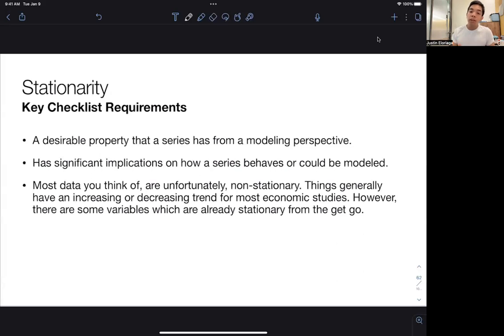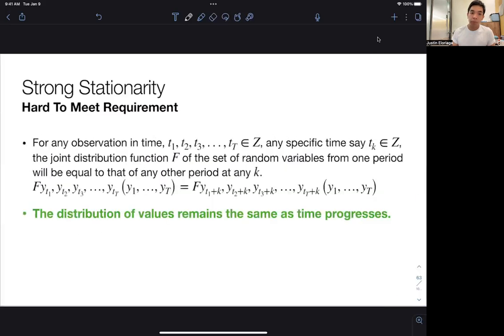And things generally, it's simply because things have an increasing or decreasing trend or they follow a certain cycle. And those are true for most economic variables. However, there are also some variables that are generally stationary from the get-go.